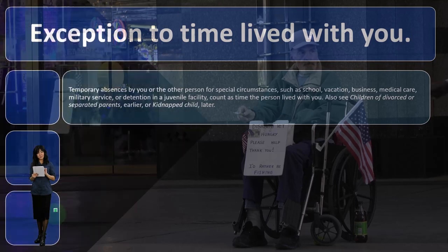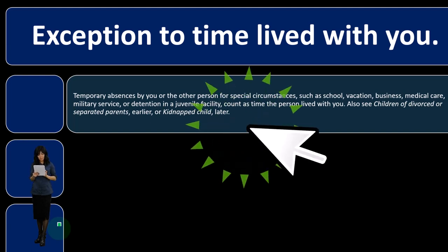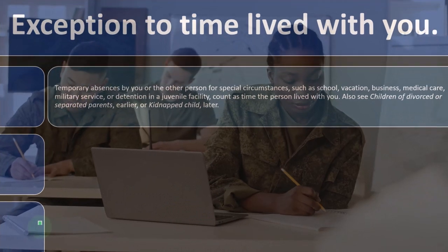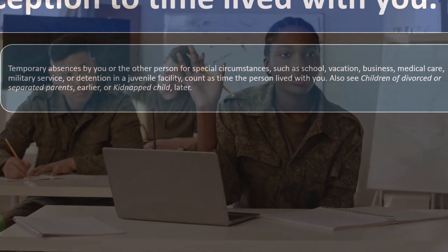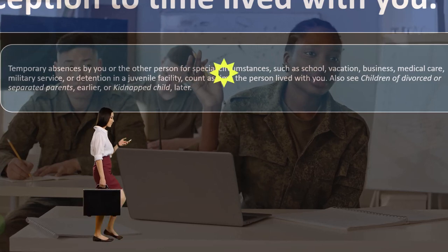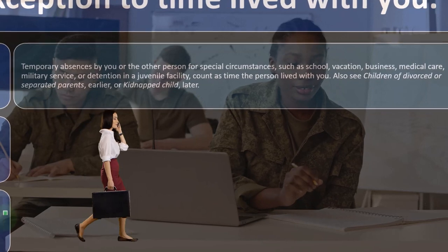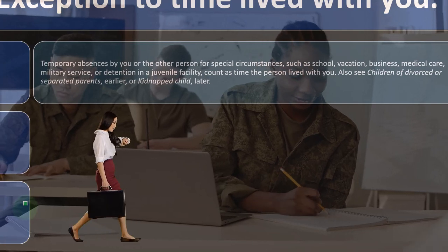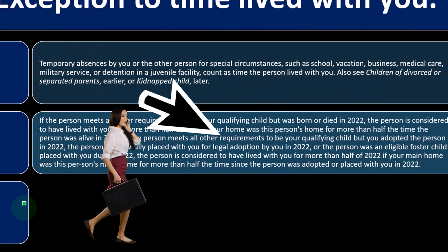Exception to the time lived with you: temporary absences by you or the other person for special circumstances — such as school, vacation, business, medical care, military service, or detention in a juvenile facility — count as time the person lived with you. In other words, if they're at a hospital or some medical facility, that still counts as living with you. Those are the exceptions to the general rule.